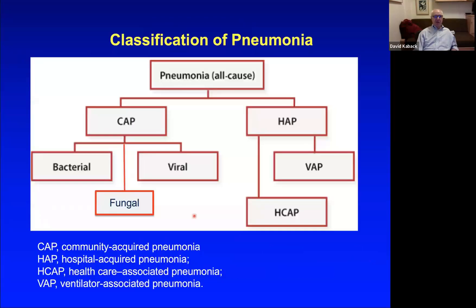Pneumonias have this classification: CAP means community-acquired pneumonia, and HAP means hospital-acquired pneumonia. Most are community-acquired, divided into bacterial, viral, and fungal etiologies.